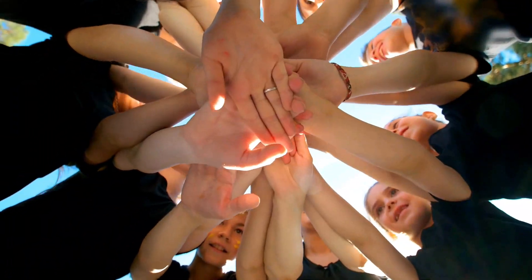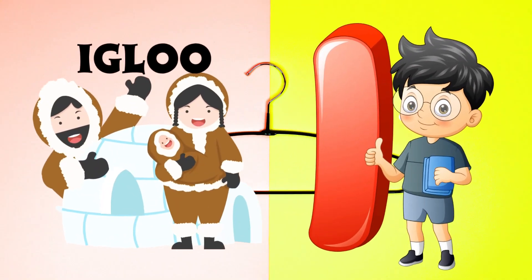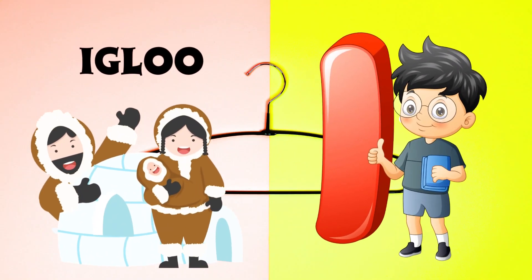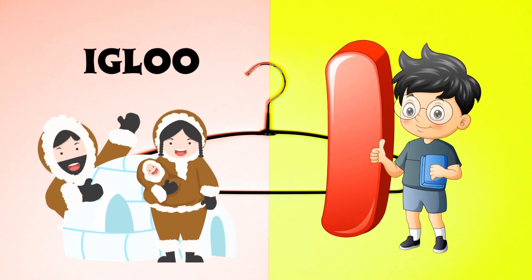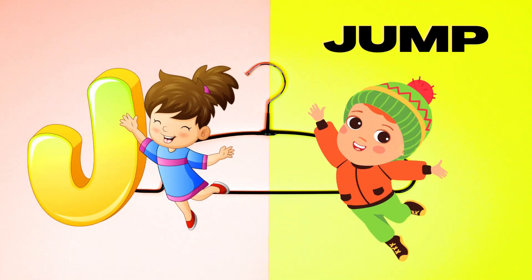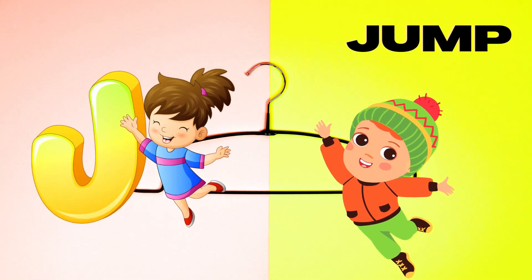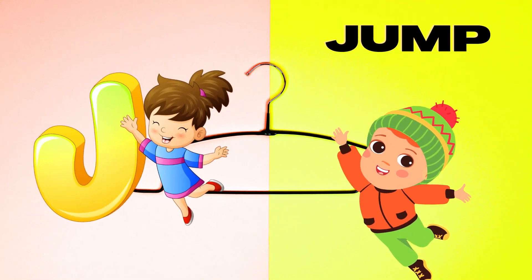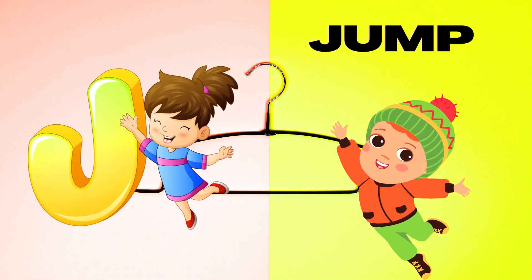I is for Igloo. I-I-Igloo. J is for Jump. J-J-Jump.